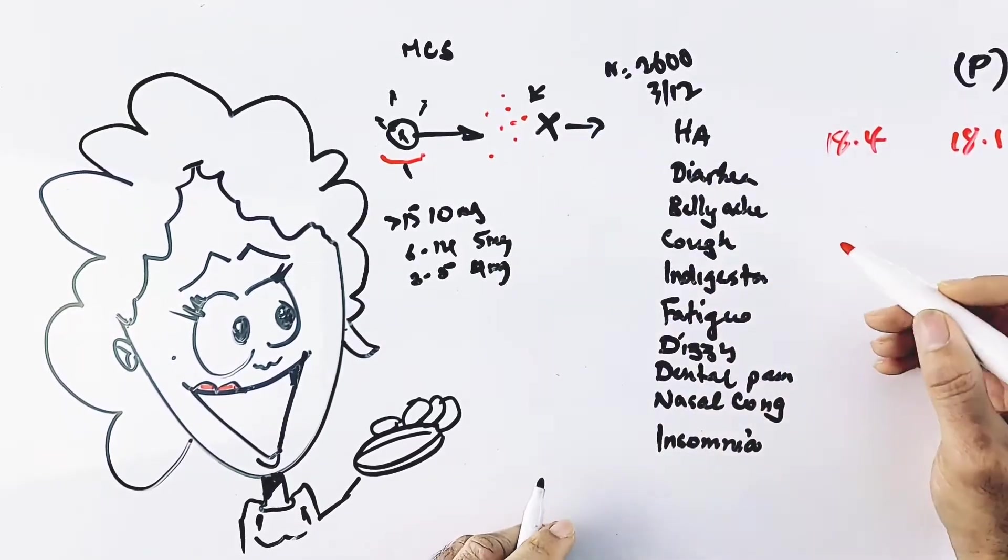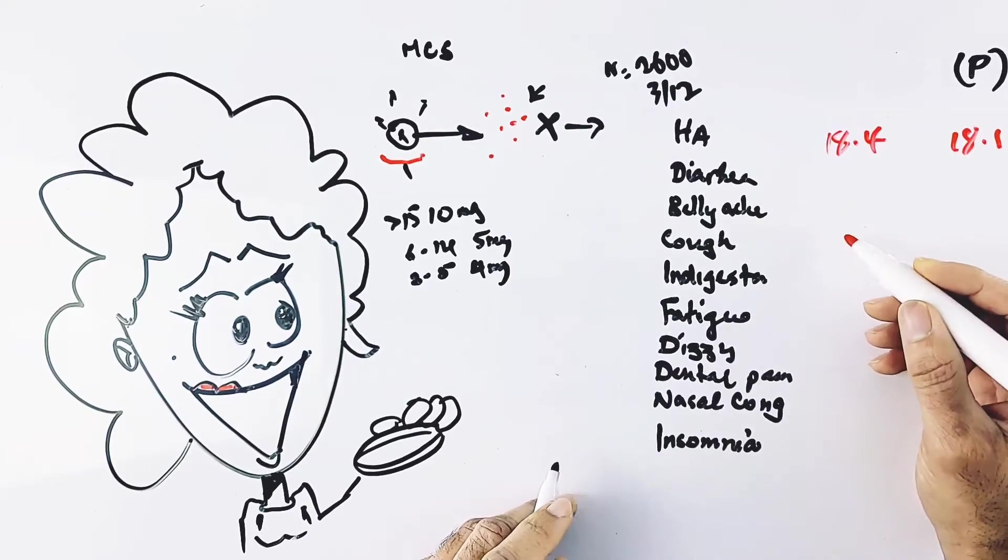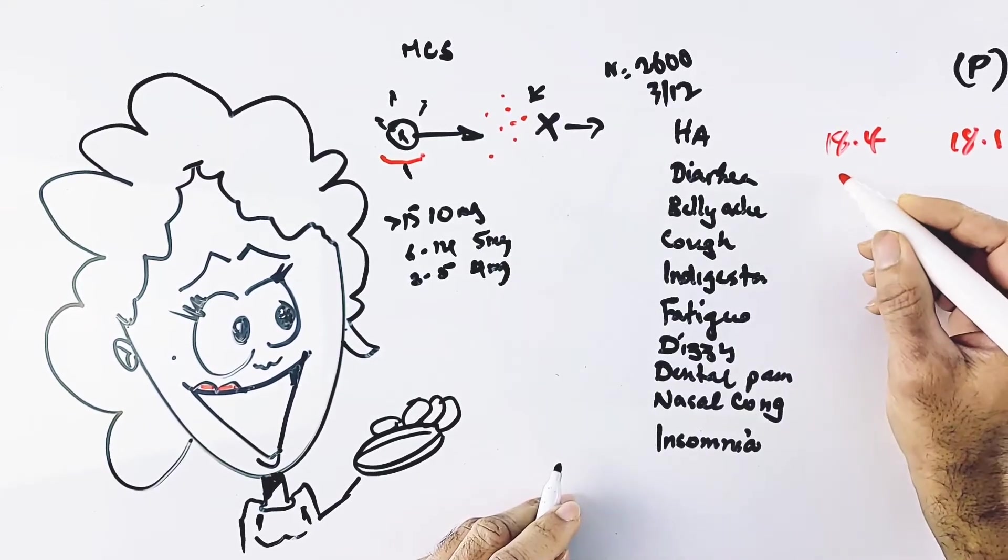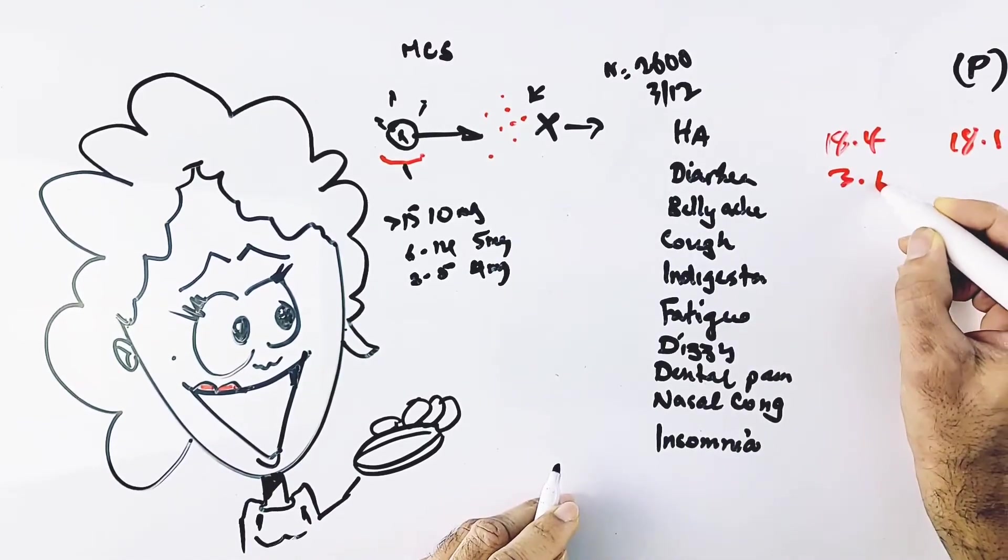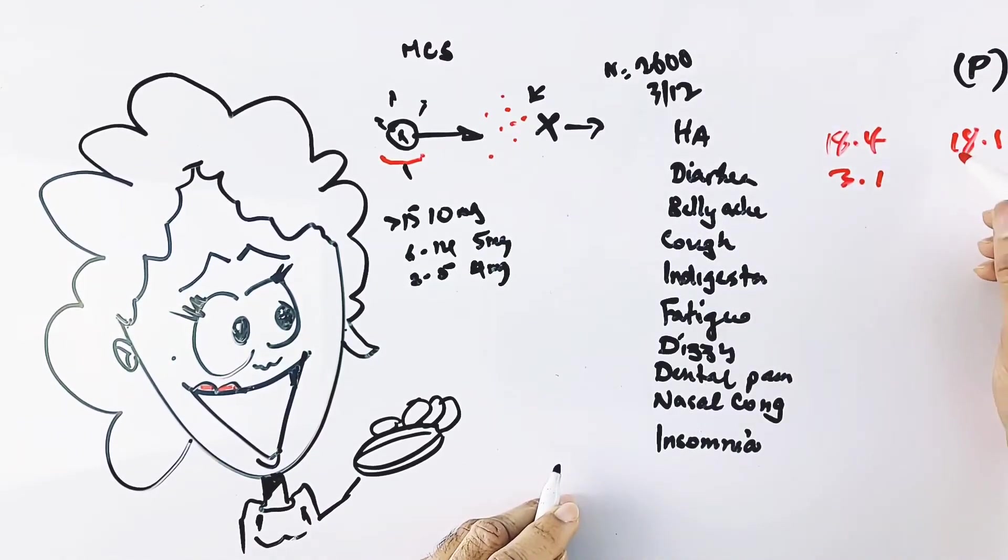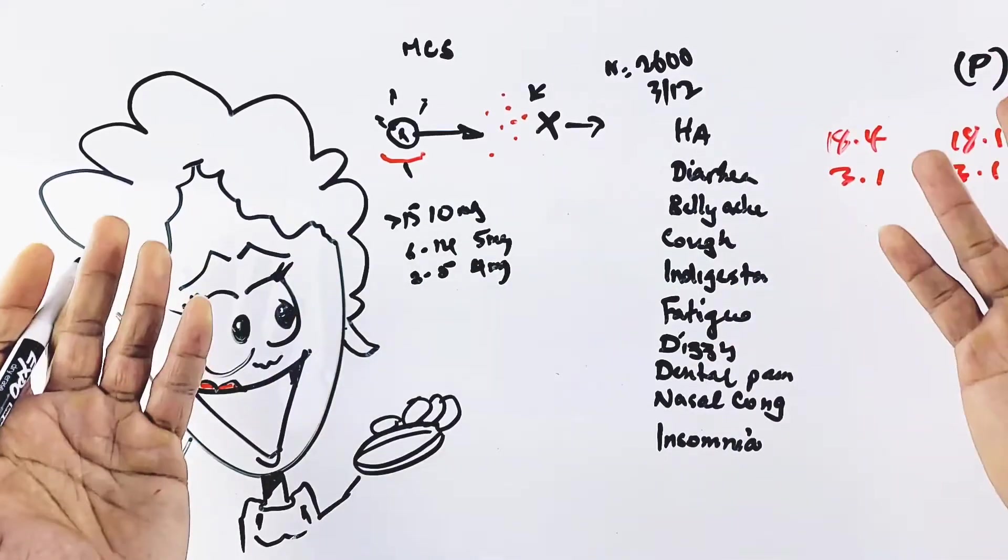The next side effect was diarrhea, which dropped precipitously from 18% down to 3.1%. In the placebo arm it was also 3.1%, so to me, not really influenced by Singulair.